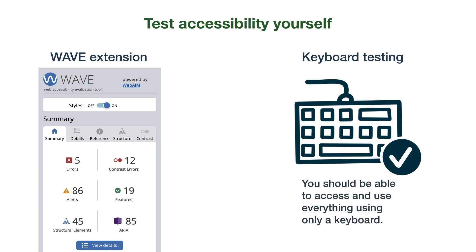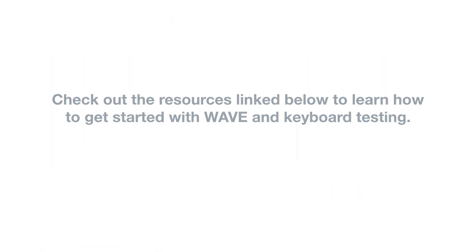Basically, you want to make sure you can access everything using only a keyboard — that means navigating and using any widgets or interactions. If there are several issues with keyboard testing, odds are there are issues with other assistive technology too. Both of these tests should align with what's in their VPAT. Check out the resources link below to learn how to get started with WAVE and keyboard testing.